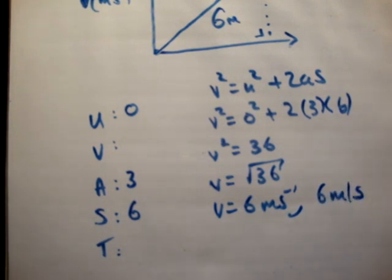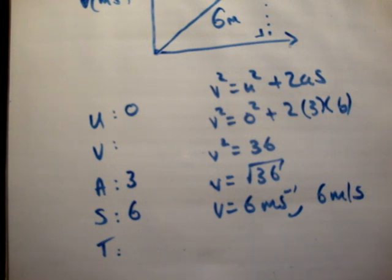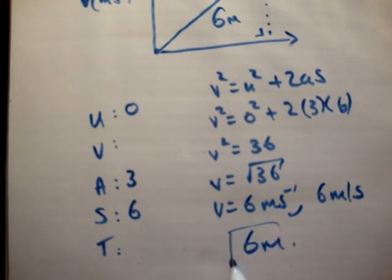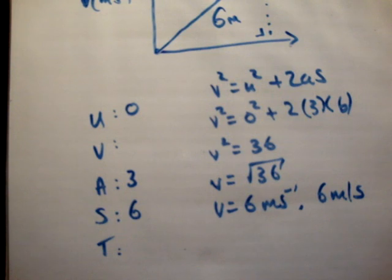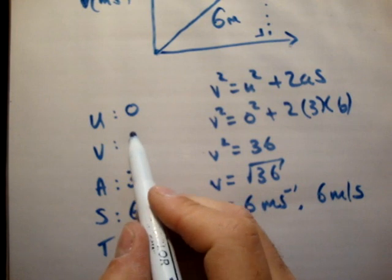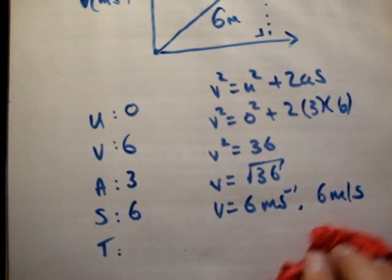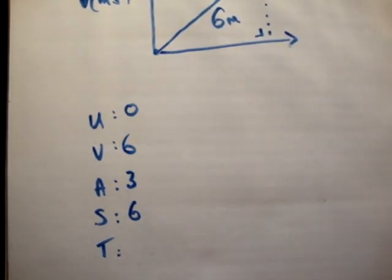Let's check that at the back of the book — 6, yes, 6 meters. It actually says the unit given at the back of the book is meters, which is incorrect because that is a distance, not a speed. But that's the answer. We may as well also find the time, now that we know the final speed is 6 meters per second.